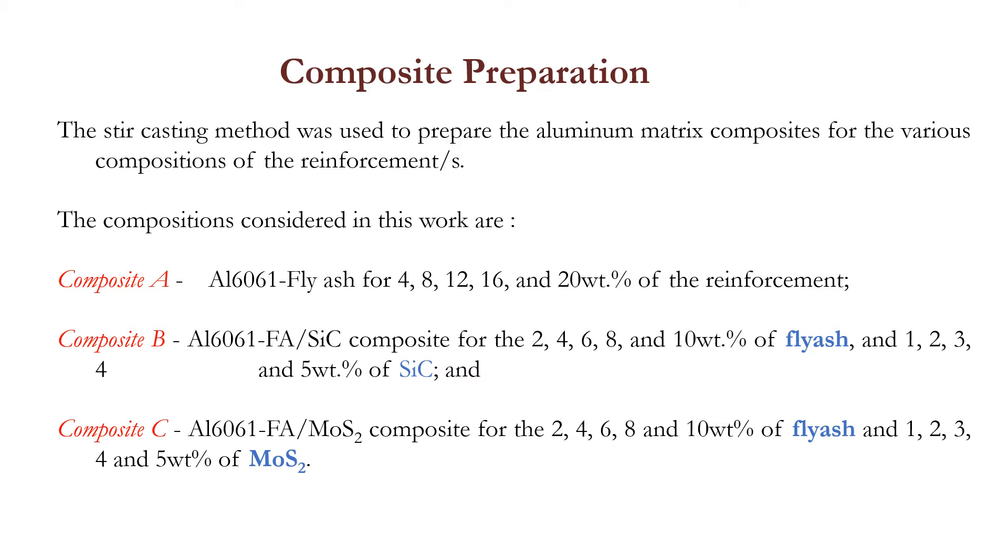Composite B consists of Aluminum 6061 Fly Ash and silicon carbide having 2, 4, 6, 8 and 10 percent of fly ash and 1, 2, 3, 4 and 5 weight percent of silicon carbide respectively.